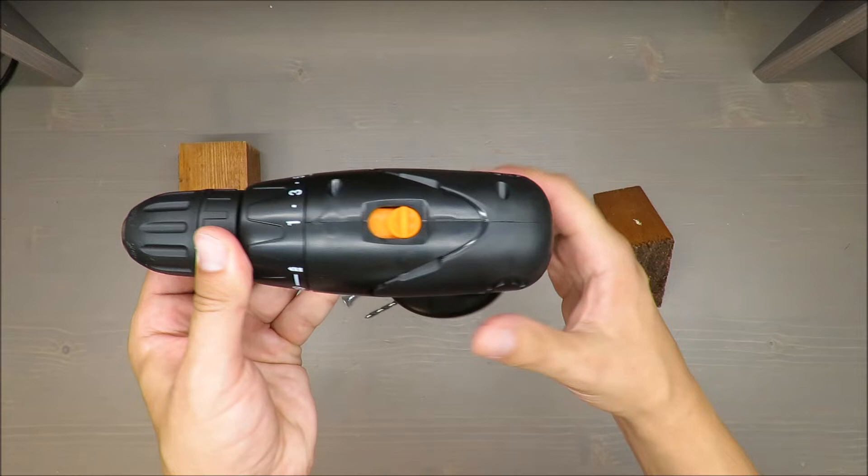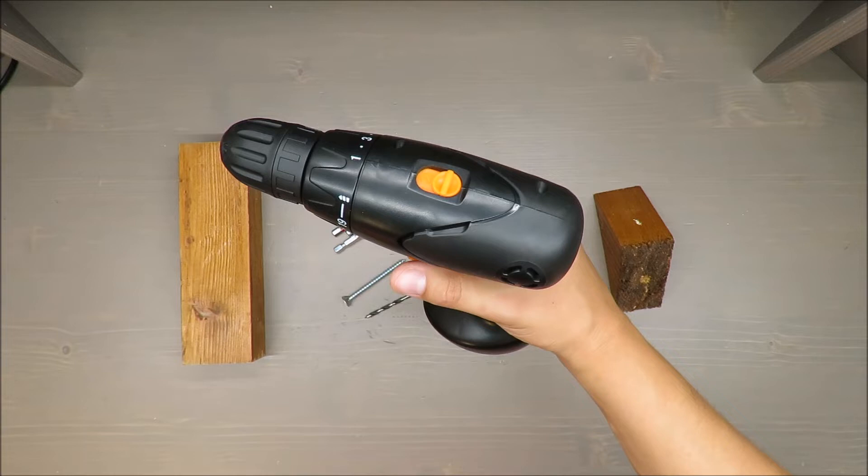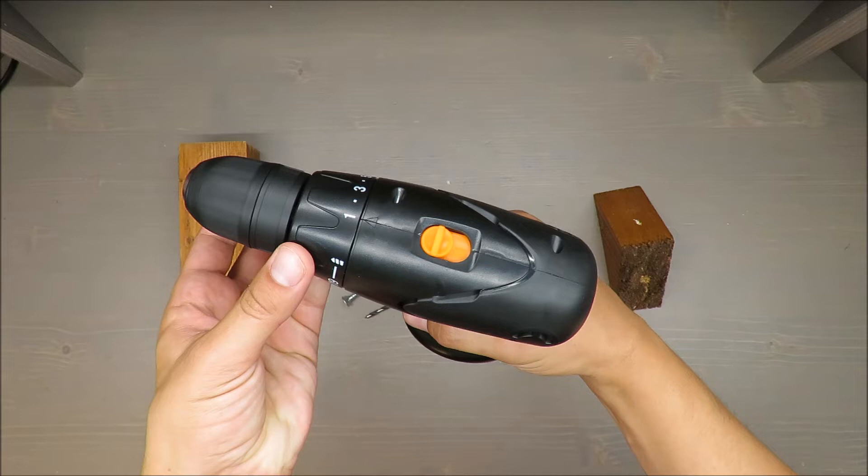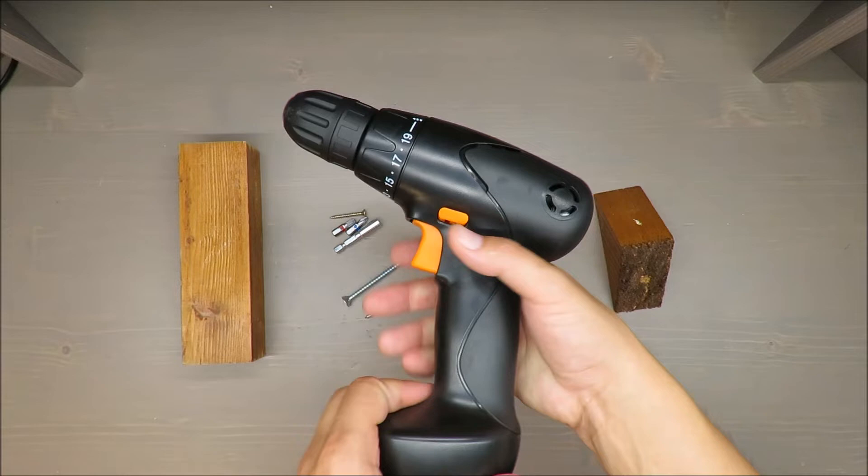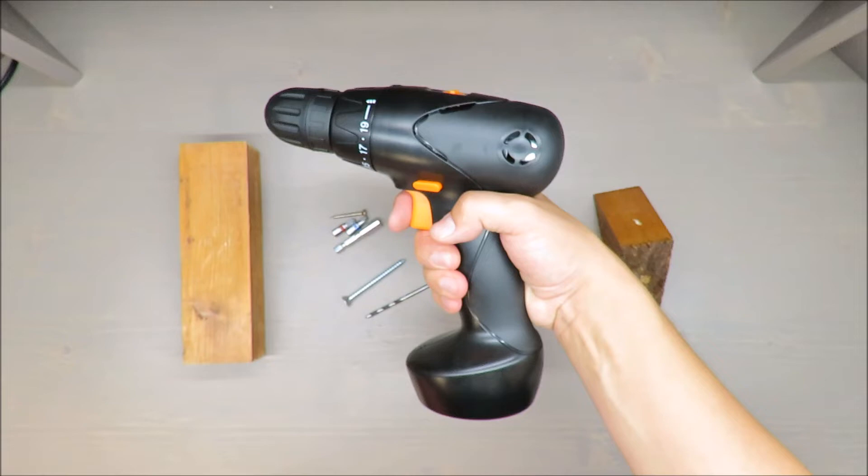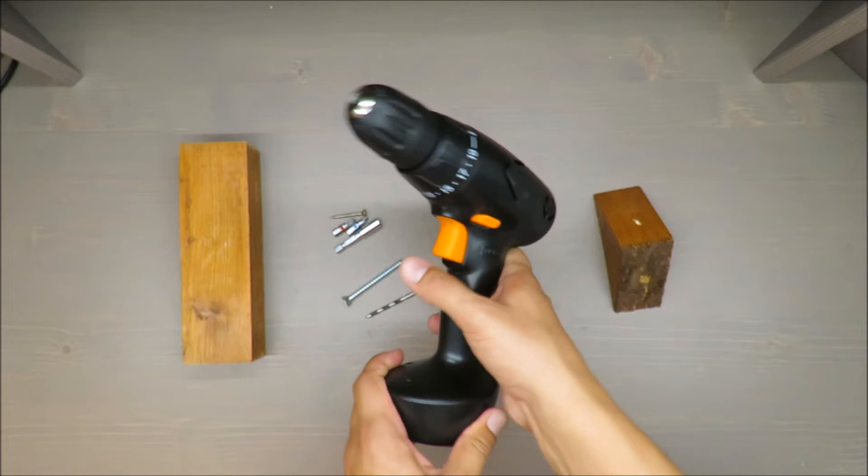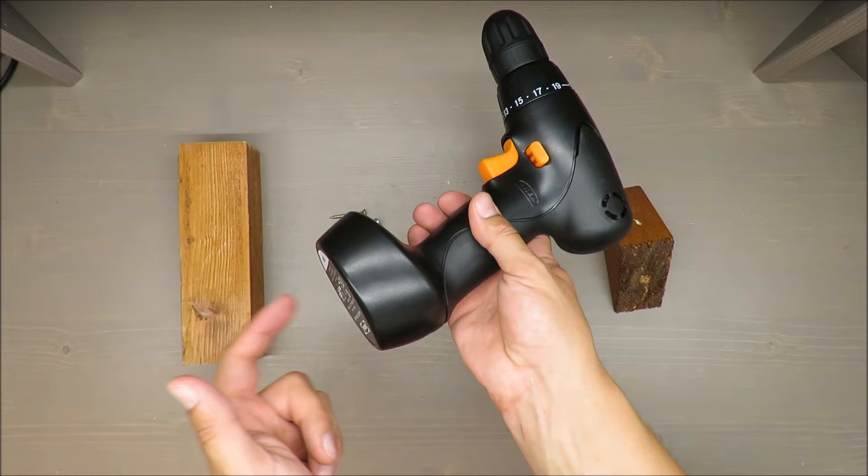It's a two-speed gear drill or screwdriver. On the first gear you have up to 350, so more torque but less rpms. On the second gear you have 1200, which is okay. Weight slightly more than 1 kg, to be precise 1.1.